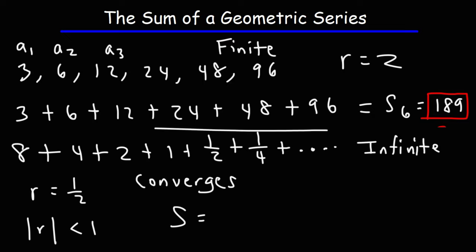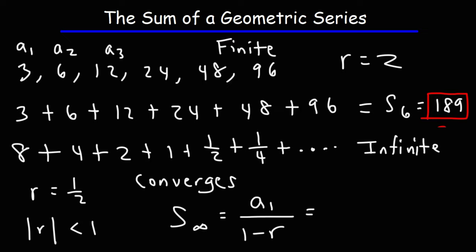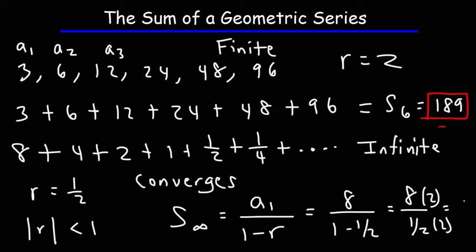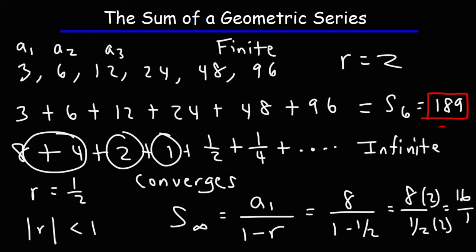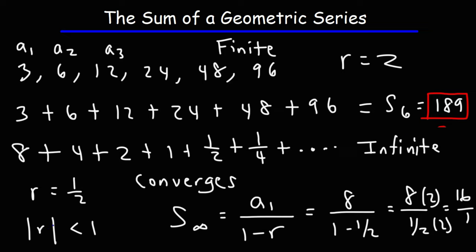The sum of this infinite geometric series, S sub-infinity, is the first term divided by 1 minus r. In this example, it's 8 over (1 minus 1/2). 1 minus 1/2 is 1/2, and 8 divided by 1/2 equals 16. If you add these numbers: 8 plus 4 is 12, plus 2 is 14, plus 1 is 15, plus 1/2 is 15.5, plus 1/4 is 15.75. If you keep going, you get closer and closer to 16 but never pass it. So that's the sum of this infinite geometric series.